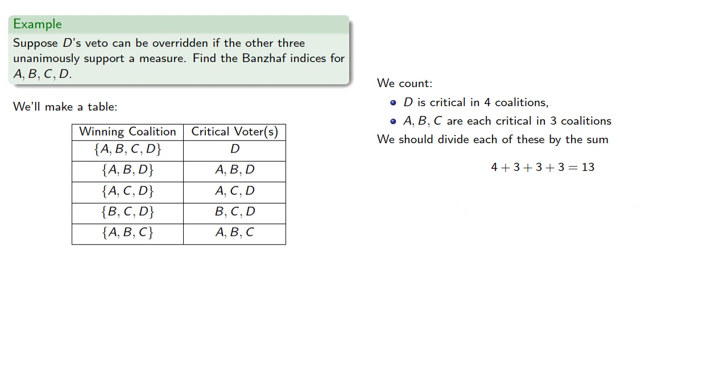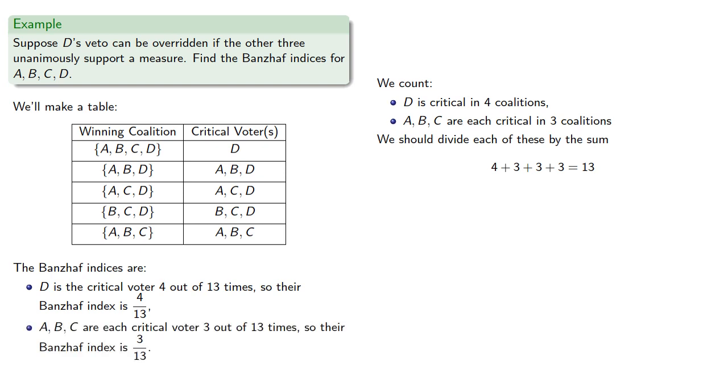And so we find the Banzhaf indices. D is the critical voter 4 out of 13 times, so their Banzhaf index is 4 thirteenths. Meanwhile A, B, and C are each critical in 3 out of 13 times, so their Banzhaf index is 3 thirteenths.